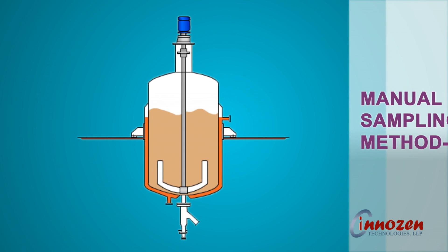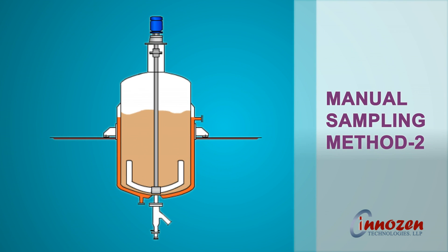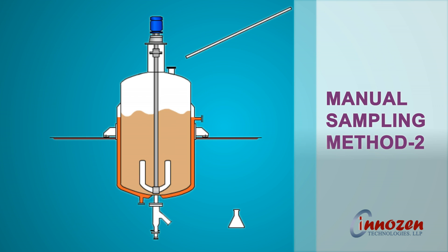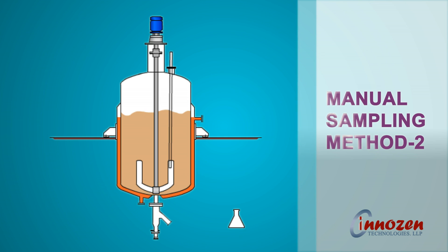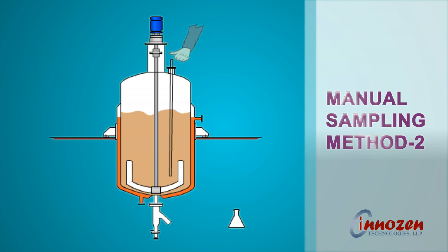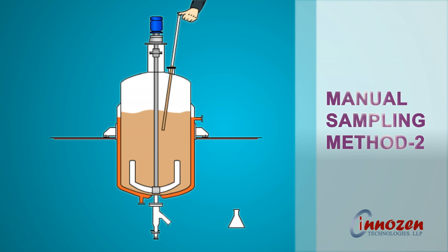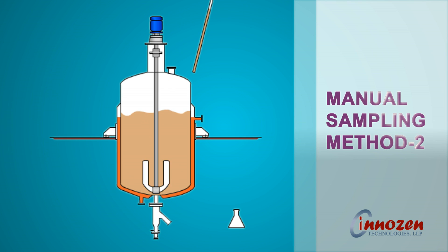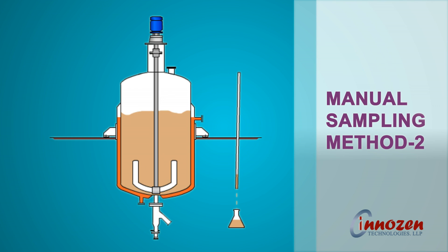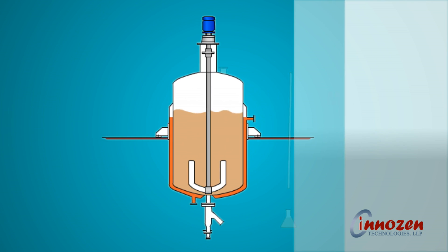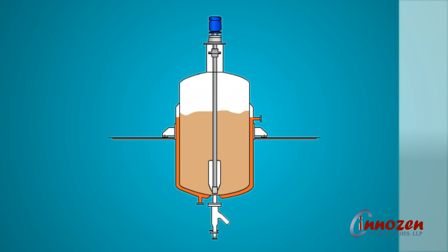In the other conventional method, a dip tube is inserted from one of the nozzles on the top dish of the reactor as demonstrated in the schematic diagram, and then the sample is picked up as shown. This procedure is cumbersome and difficult to adopt if the reaction is being carried out under a positive pressure or under vacuum, or involves toxic fumes.